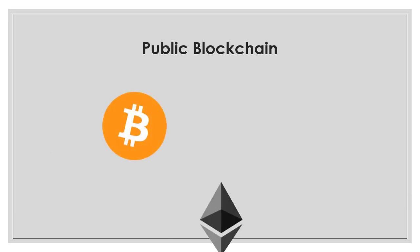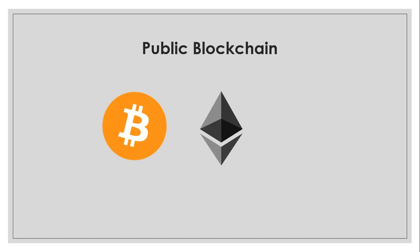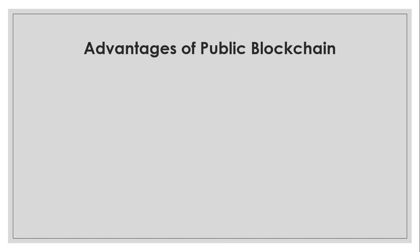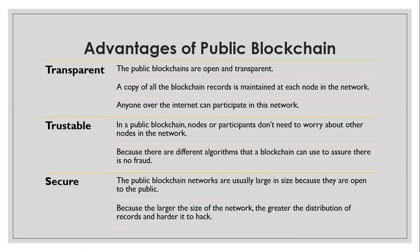Common examples of public blockchain include Bitcoin, Ethereum, and Litecoin. Moving to the advantages: public blockchains are transparent in nature — they are open to everyone. Anyone over the internet can participate in the network, and once we participate, a copy of all blockchain records is maintained in our local system.